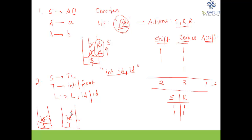The next symbol is comma. For T, L, comma there is no grammar rule, so the compiler pushes the next incoming symbol ID — one more shift action. Now L, comma, ID together form one reduce action, reducing to L. So we again have T and L on the stack.